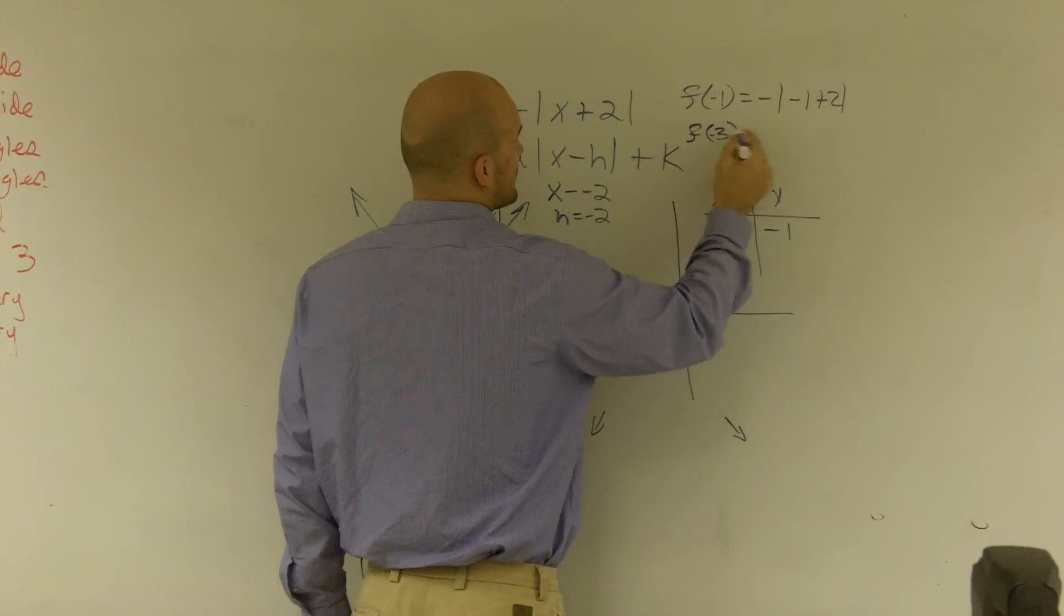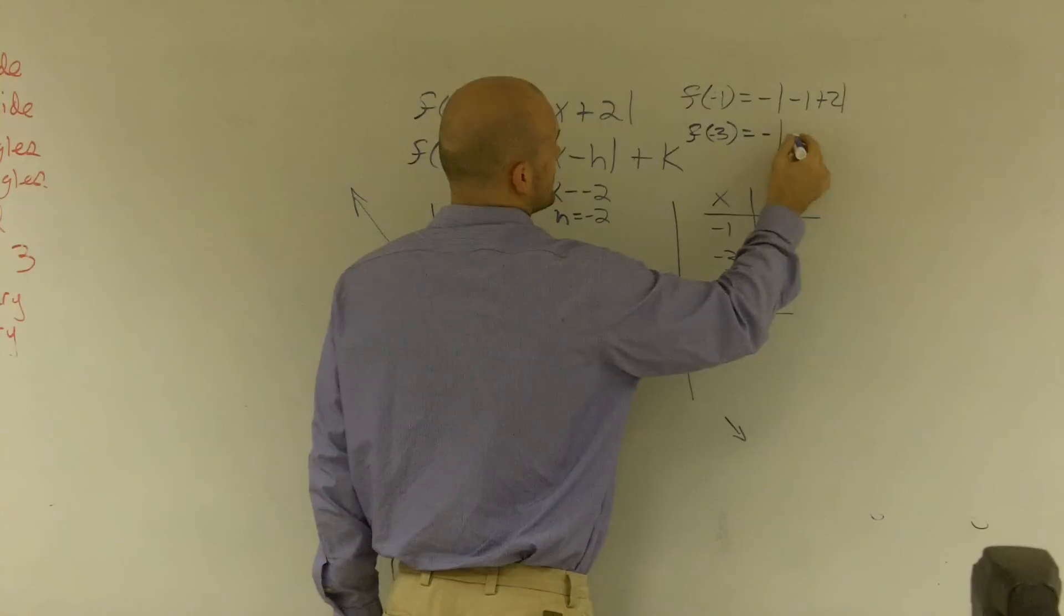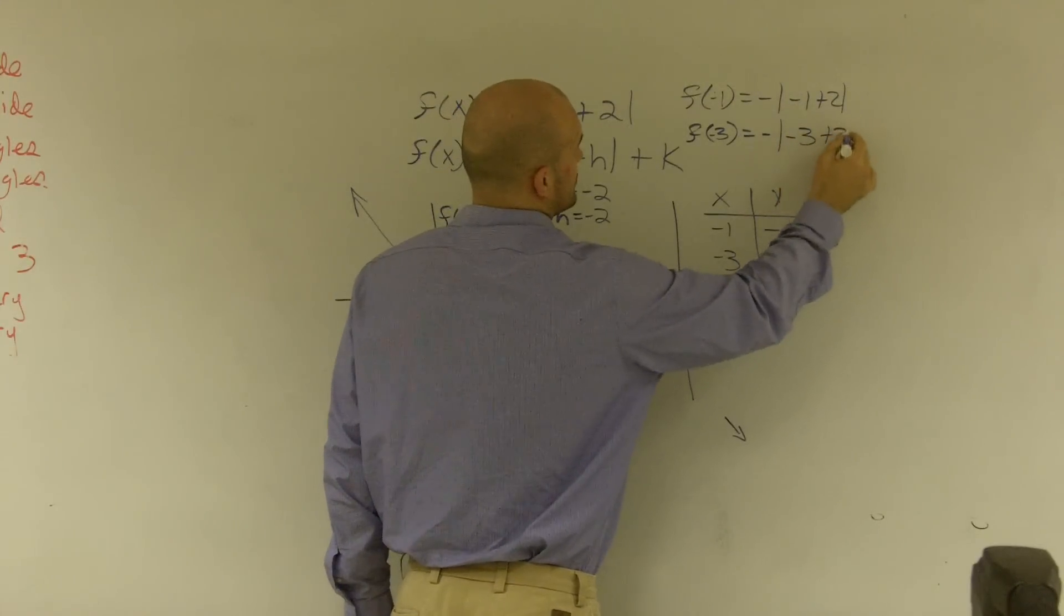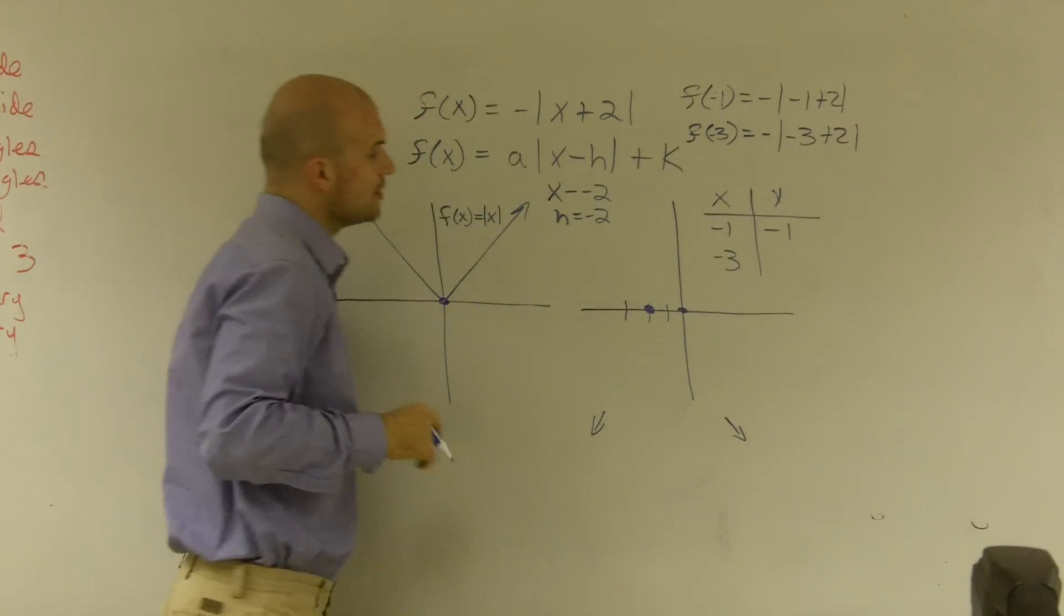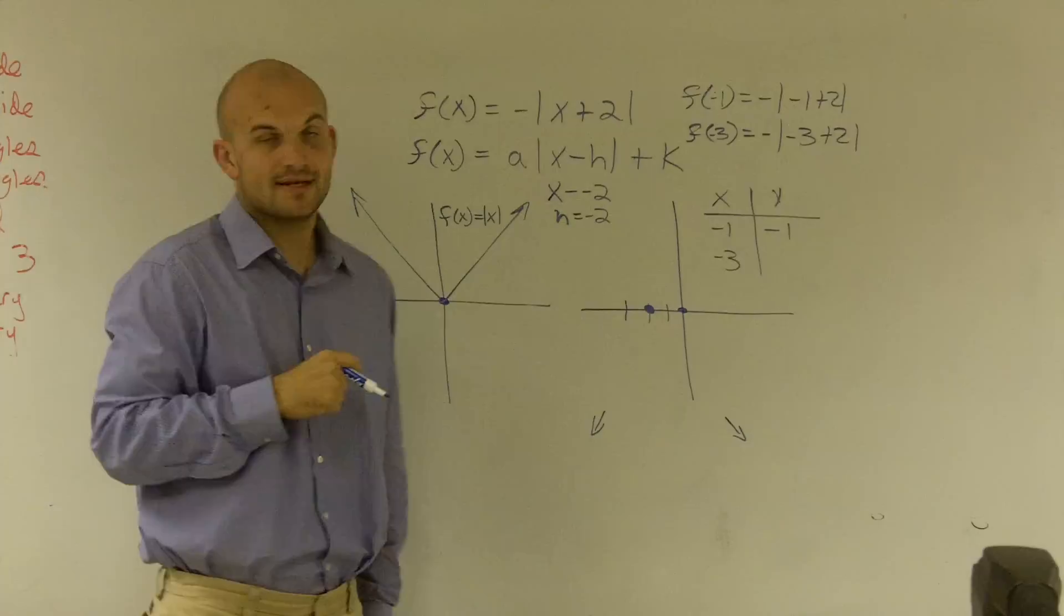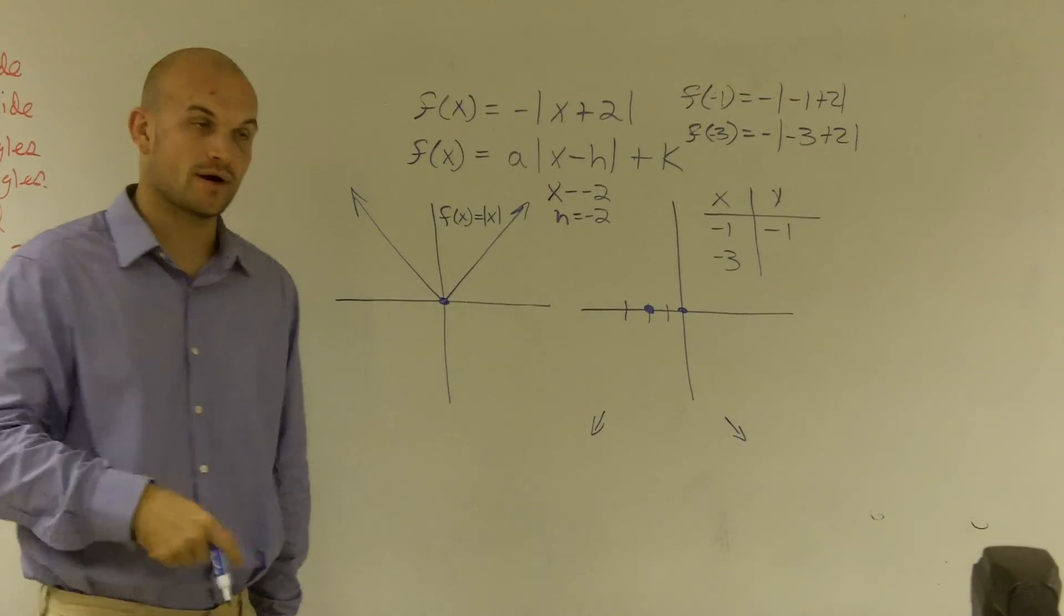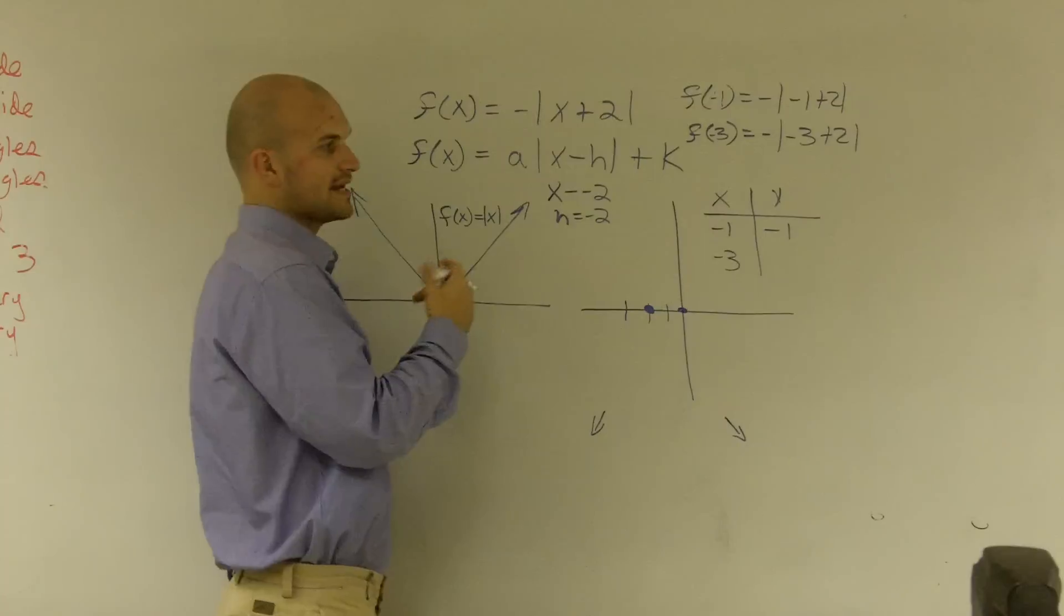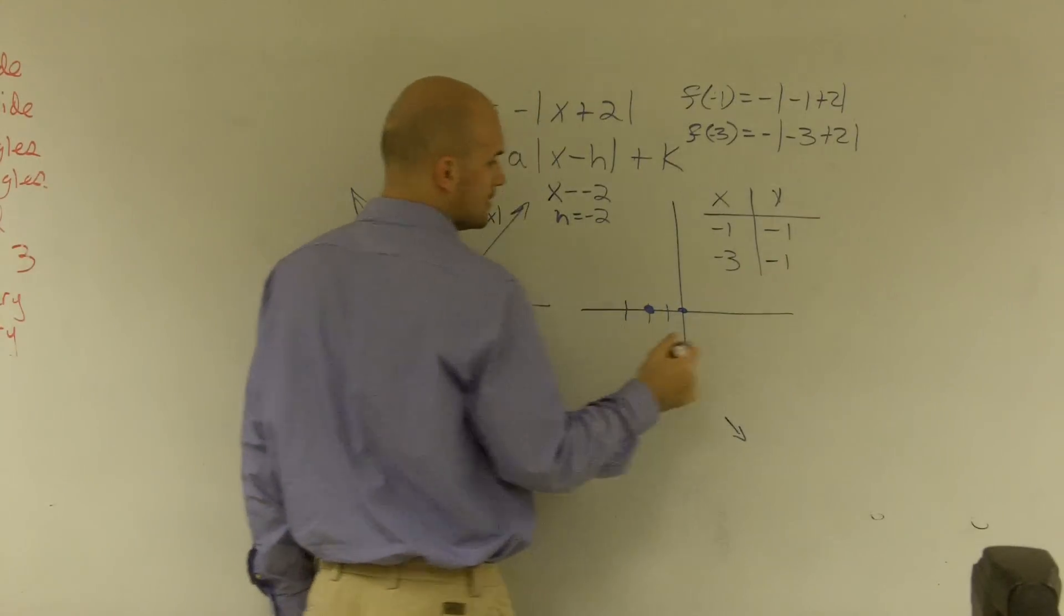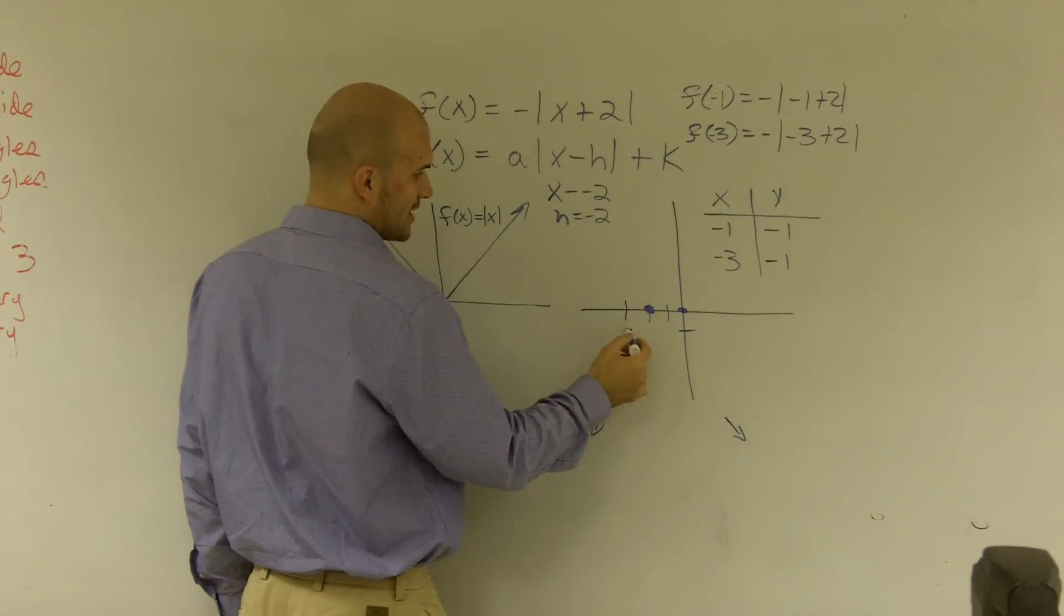f(-3) = -|-3 + 2|. Well, -3 + 2 is -1. Absolute value of -1 is 1. 1 times -1 is -1. So these points go down to -1.